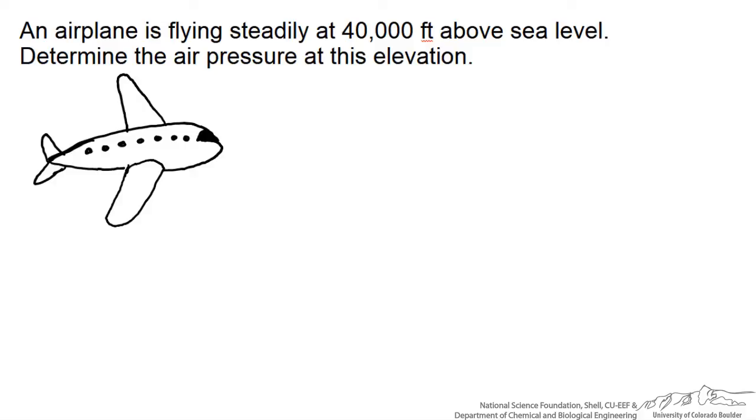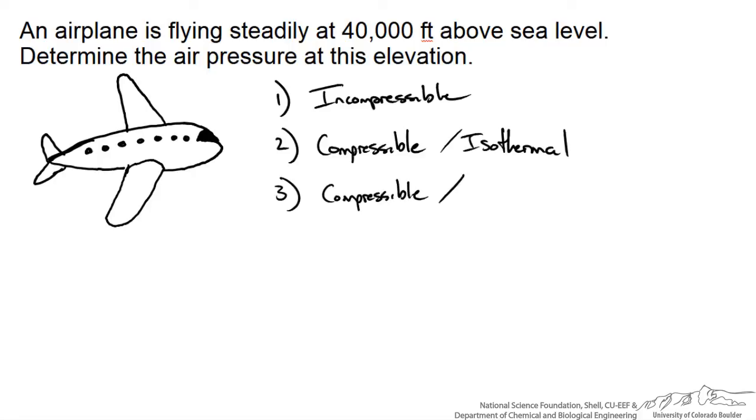One, that the fluid is incompressible. Two, that the fluid is compressible and isothermal. Three, the more realistic case in which we have a compressible gas, air, and a non-isothermal temperature gradient for our elevation.